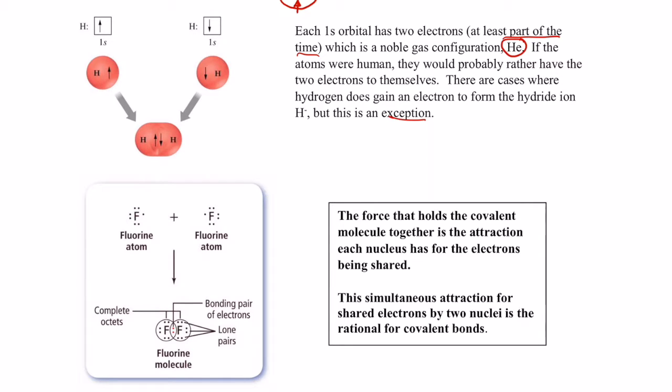Here's another example. If I were to draw the dot picture for the fluorine atom, it has seven valence electrons. Well, here's another fluorine atom. If they were able to get close enough to each other, their orbitals could overlap and they could share a pair of electrons.